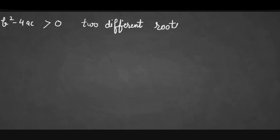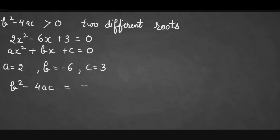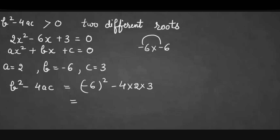Let's take the example 2x² - 6x + 3 = 0. Comparing with ax² + bx + c = 0, a = 2, b = -6, and c = 3. Calculating b² - 4ac: (-6)² - 4(2)(3) = 36 - 24 = 12. Since 12 is greater than 0, this quadratic equation has two different roots.